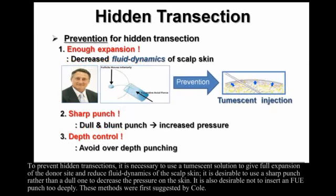To prevent hidden transections, it is necessary to use a tumescent solution to give full expansion of the donor site and reduce fluid dynamics of the scalp skin. It is desirable to use a sharp punch rather than a dull one to decrease pressure on the skin, and also not to insert an FUE punch too deeply. These methods were first suggested by Cole.